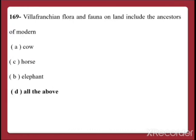Question 169: Villa Franchian flora and fauna on land includes the ancestors of modern — A. Cow, B. Horse, C. Elephant, D. All of the above. The ancestors of cows, horses, and elephants were all found in the Villa Franchian flora and fauna, so the answer is D — All of the above.